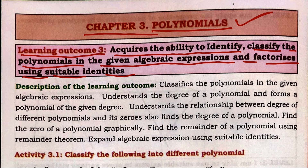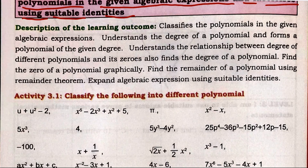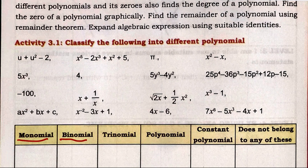First, we're going to define what polynomials are. 'Poly' means many, 'nominal' means terms — so an expression with many terms is called a polynomial. Using the degree of the polynomial, we can classify them as monomial, binomial, trinomial, and polynomial. Some expressions do not belong to any of these categories.